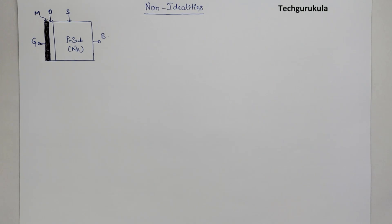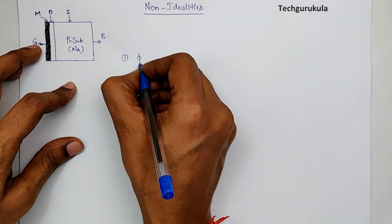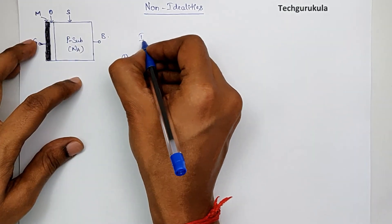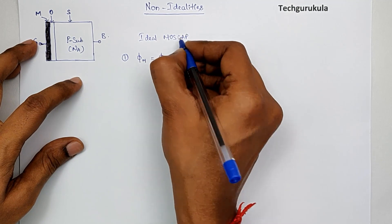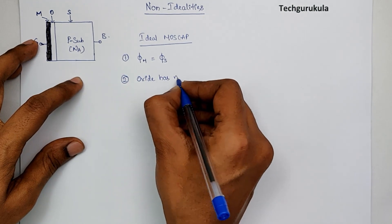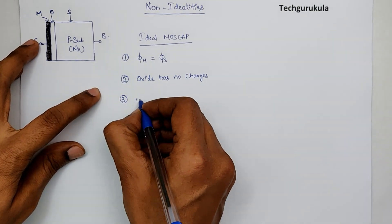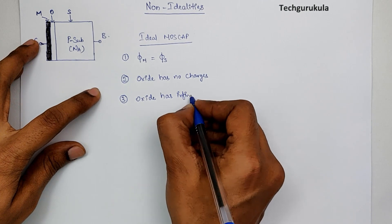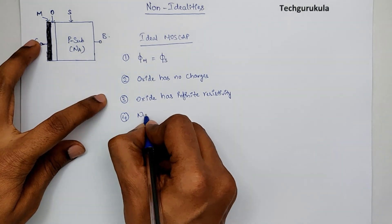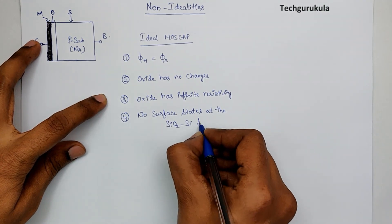The assumptions we made for the ideal MOSCAP were: first, the work function of the metal was equal to the work function of the semiconductor; second, the oxide has no charges; third, the oxide has infinite resistivity; and fourth, there are no surface states at the silicon dioxide-silicon interface.